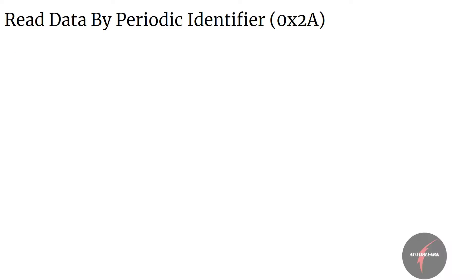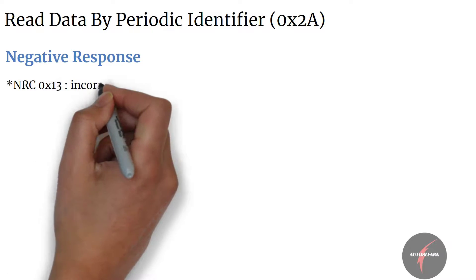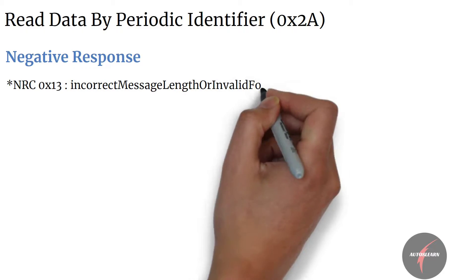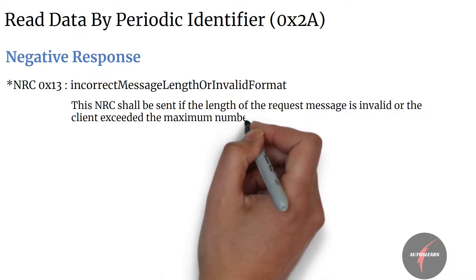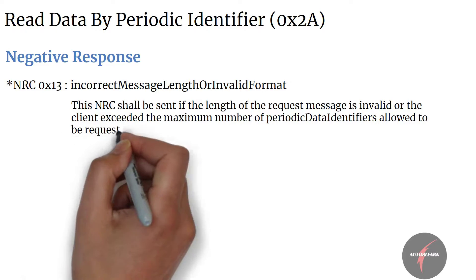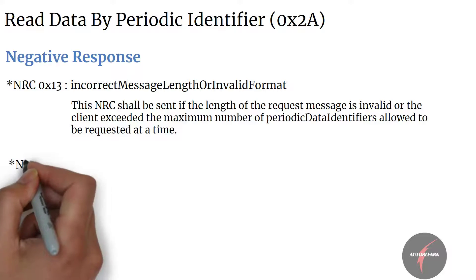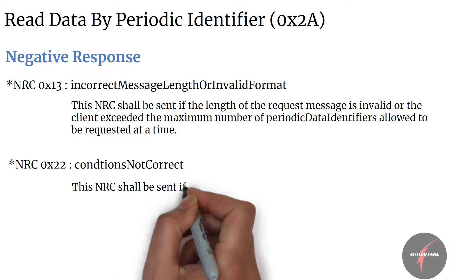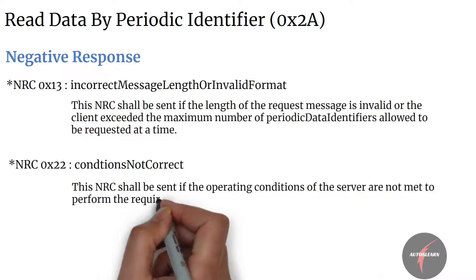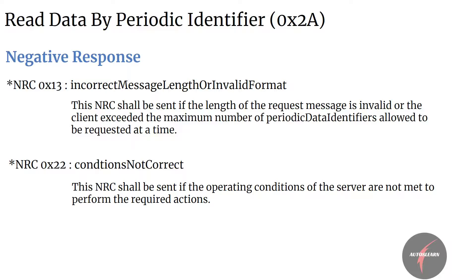Let's look at the negative responses supported by the service. NRC 0x13 — incorrect message length or invalid format — shall be sent if the length of the requested message is invalid or if the client exceeds the maximum number of periodic data identifiers allowed to request at a time. NRC 0x22 — condition not correct — shall be sent if the operating conditions of the server are not met. For example, if the client requests periodic data identifiers with different transmission modes and the server does not support multiple transmission modes simultaneously, NRC 0x22 shall be sent.